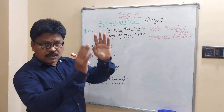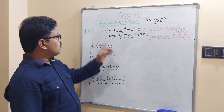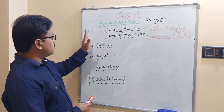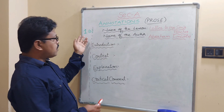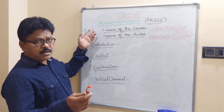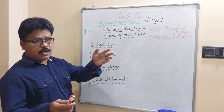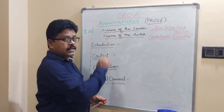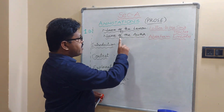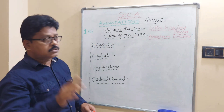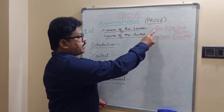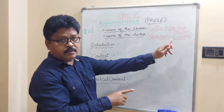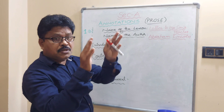Then write 'Annotations' as the heading. For prose, write the question number — 1A, 1B, 1C, or 1D — since four are given but only two need to be answered. For annotations, write the headings: name of the lesson and name of the author. For example, name of the lesson: 'Letter to His Son's Teacher'; name of the author: Abraham Lincoln.